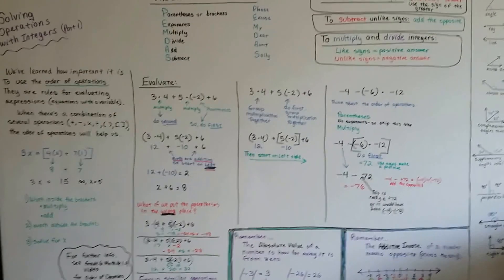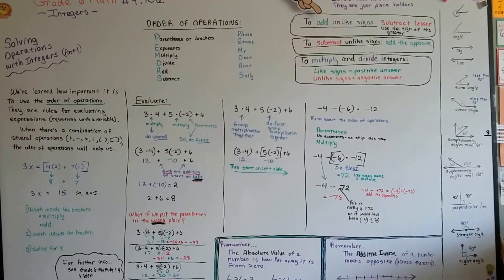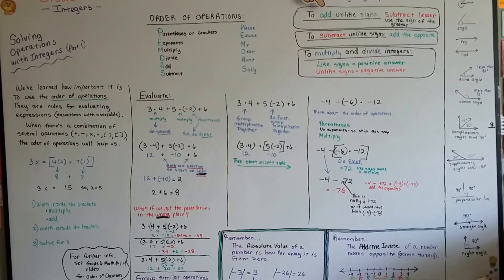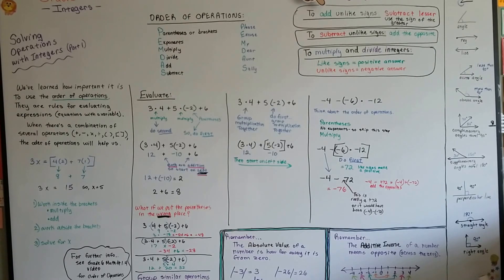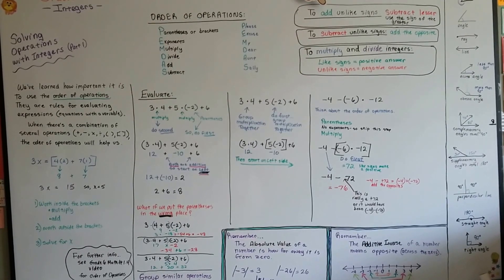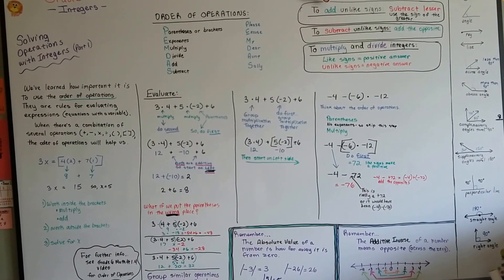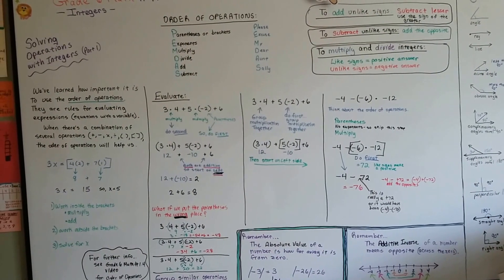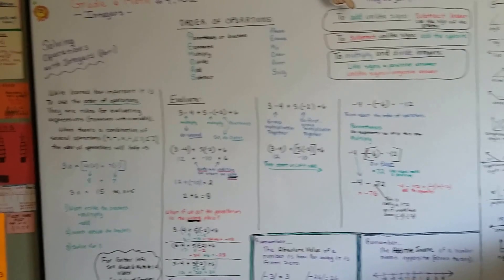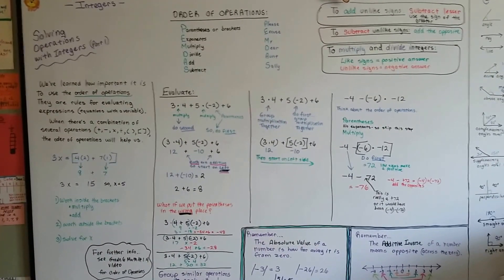In the next video we'll talk about how the commutative, associative, and distributive properties can help us do this. Remember: absolute value is the distance away from zero, and the additive inverse is the opposite number across zero — so the additive inverse of negative 4 is positive 4. Keep trying, and I'll see you in the next video.